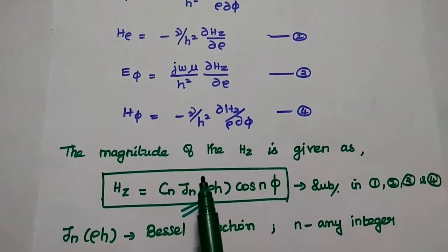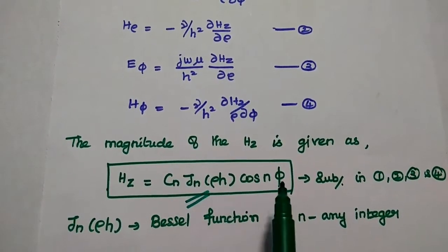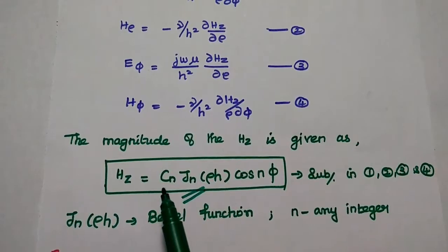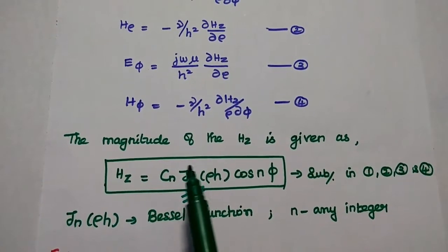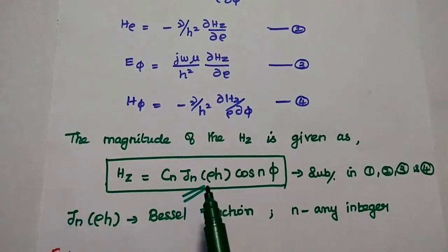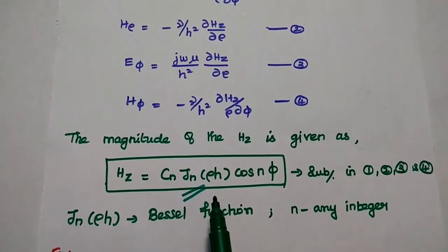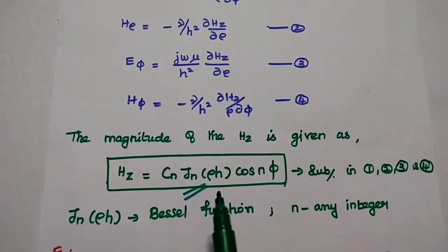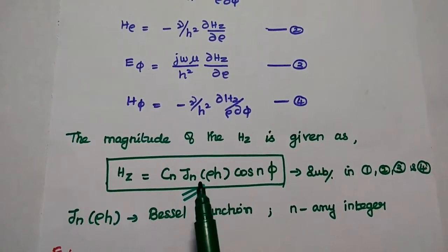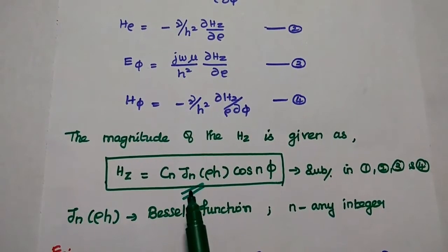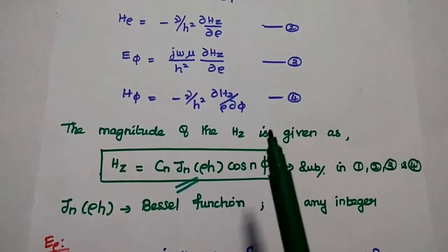The magnitude of Hz is given as Cn * Jn(rho*H) * cos(n*phi). Here Cn is the constant value, and Jn(rho*H) represents the Bessel function. We have already discussed the Bessel function in circular waveguide in the previous lecture video, so you can refer to that video for better understanding. Now we are going to substitute this Hz value into the above four equations.